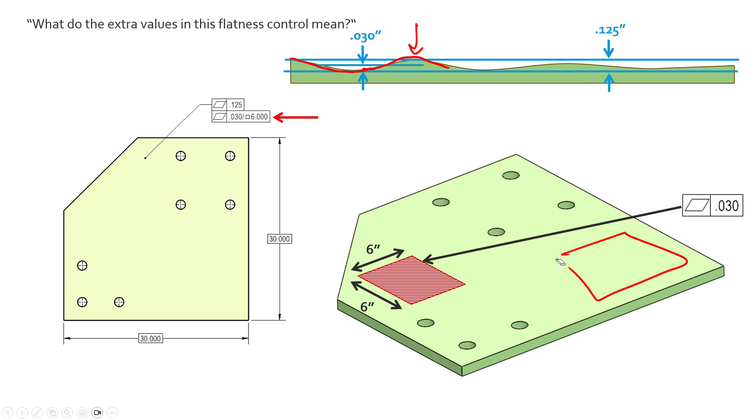We might pass some of the squares over here, six by six squares for flatness of 30 thousandths, but once we get over to this area we see that the rate of change is much quicker and much higher and cannot be captured by that 30 thousandths in a six by six square.